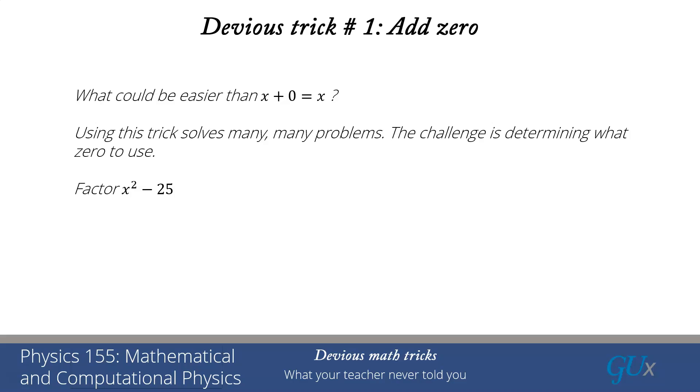Looking at the two terms, it seems like adding and subtracting 5x, which is adding zero, is likely to help. We're going to regroup those terms into x times (x minus 5) plus 5 times (x minus 5), and then you see I can easily do a factorization into (x plus 5) times (x minus 5).